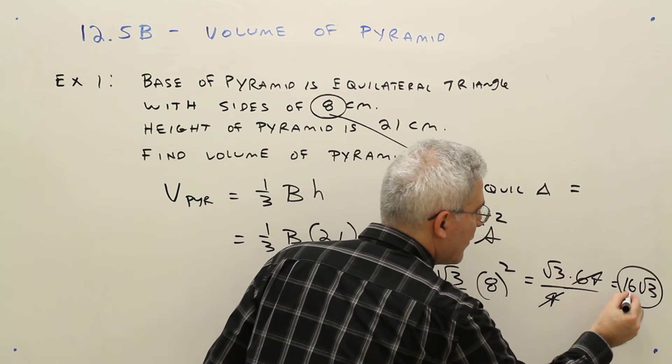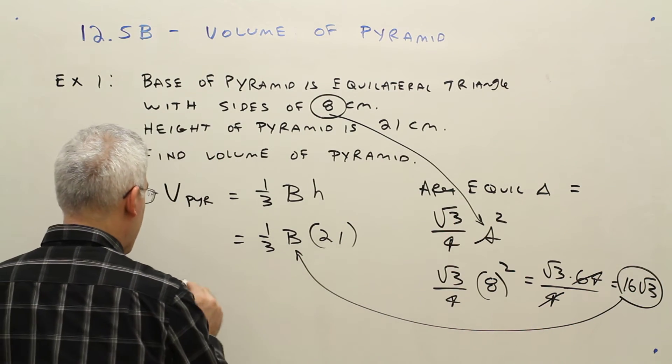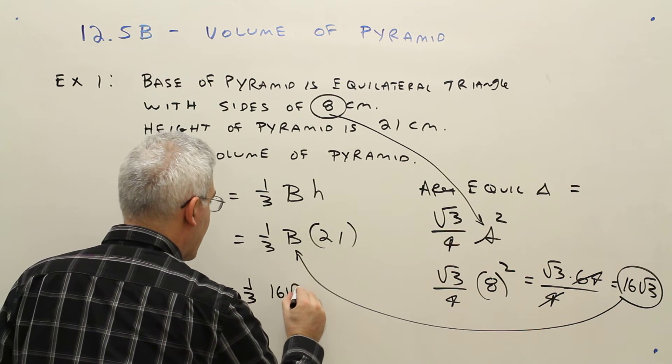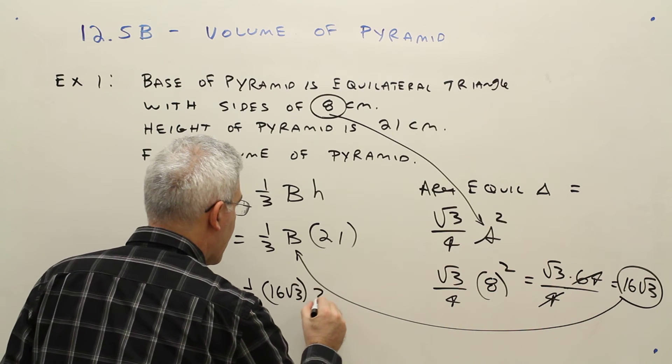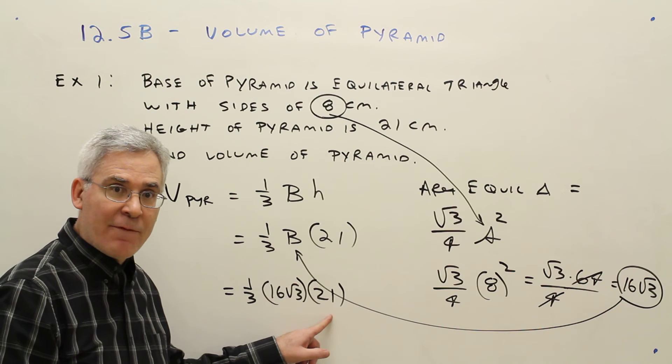So all we're going to do is take that and put it into that formula right there. So now we get one-third times 16 square root of 3 times 21. One-third times 21 is 7. 7 times 16...